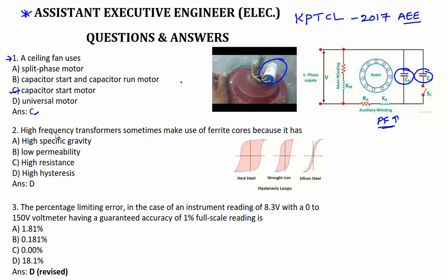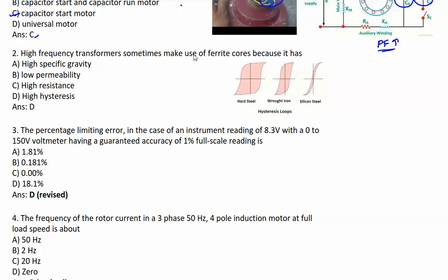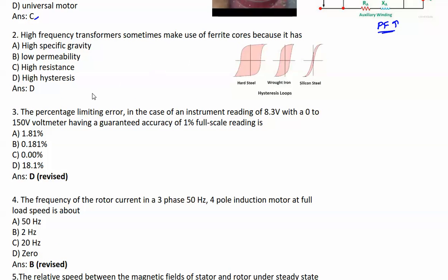Next question: High frequency transformers sometimes make use of ferrite cores because it has high hysteresis. Sometimes, not always, make use of the ferrite core. Generally it's silicon steel lamination. As you can see here, the ferrite core is having less area.